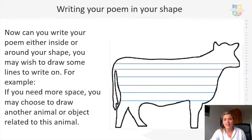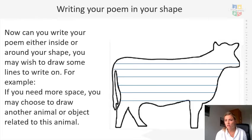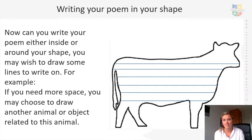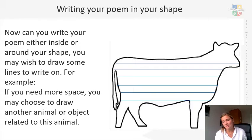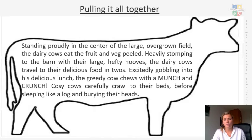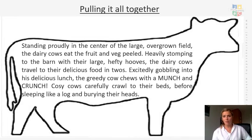To do this, draw the outline of your shape on a piece of A4 and really spread it out. If you're using lined paper, your lines will already be there; if not, you may choose to draw some lines in — though you don't have to if you're confident writing in a straight line. Here is an example: I've drawn my cow and added lines in the middle, so I'm ready to start writing my poem.